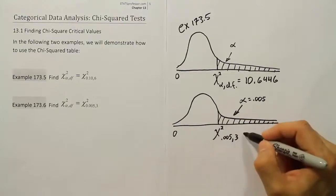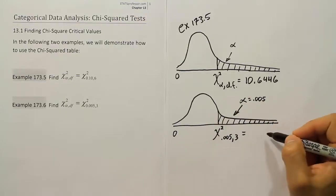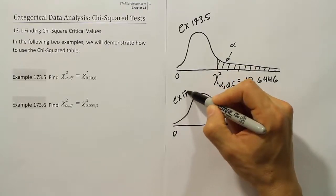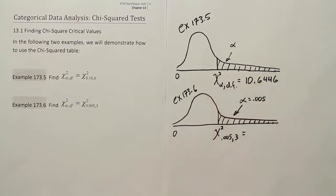So let's try to look up that value and see what we come up with here for example 173.6. Let's go to our table and look up these two numbers and see what we find.